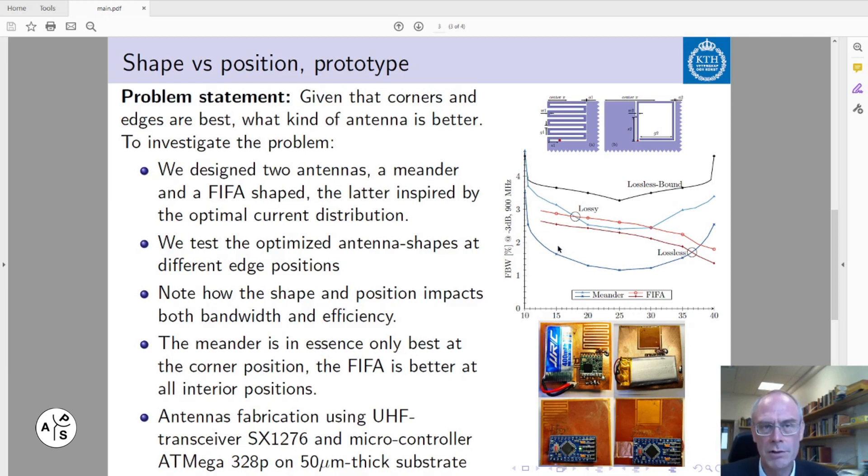The meander antenna is really only the very best at the corners, while the FIFA antenna is better in the interior. This shows that the shape of the antenna is really important for obtaining the best bandwidth depending on the position of the embedded antenna.